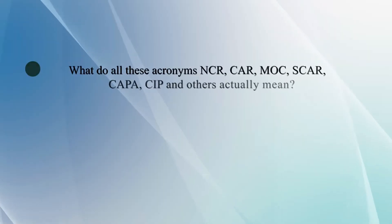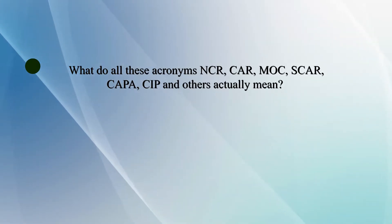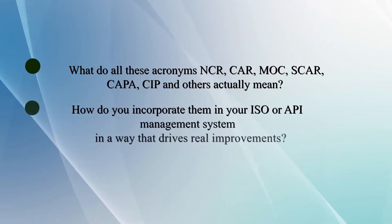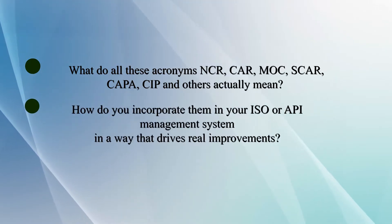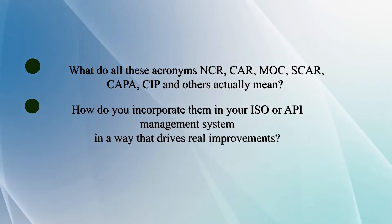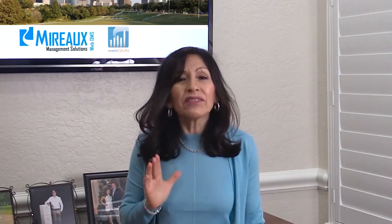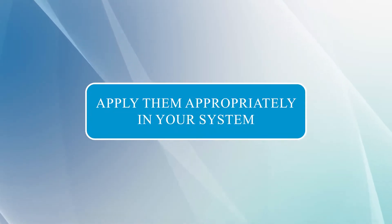In this video, we're cutting through the confusion and giving you clear answers to questions you've probably asked yourself, like: what do all these acronyms mean — NCR, CARS, MOC, SCAR, CAPA, CIP, and others? How do you incorporate them into your own ISO or API management system in a way that drives real improvements? And how do you promote their use in your company? With my recommendations, you will feel comfortable using these terms and will apply them appropriately in your system.